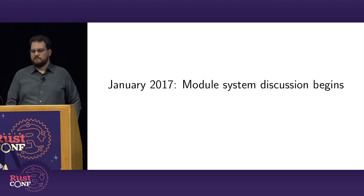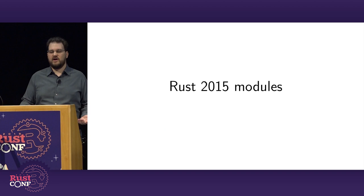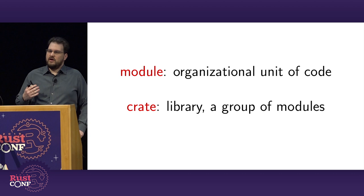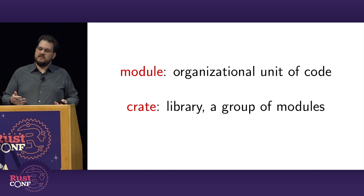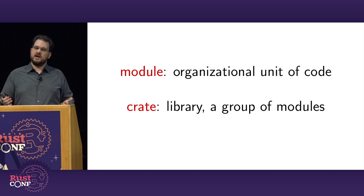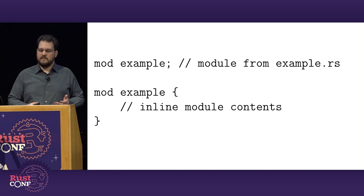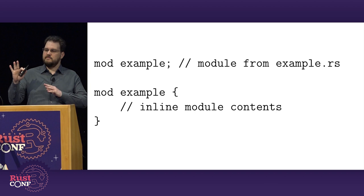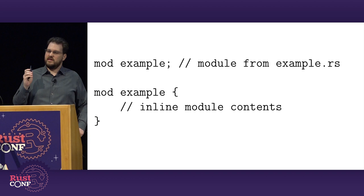I want to give a little overview of how Rust modules work, starting with the Rust 2015 module system. In Rust terminology, a module is one organizational unit of code, often but not always corresponding to one source file. A crate is a library or group of modules used as a reusable library within the Rust ecosystem. You can say 'mod example;' to get a module from example.rs, or 'mod example {}' with curly braces to inline the contents of a module — useful for local organization within a large file.